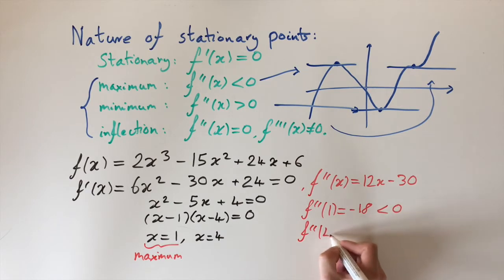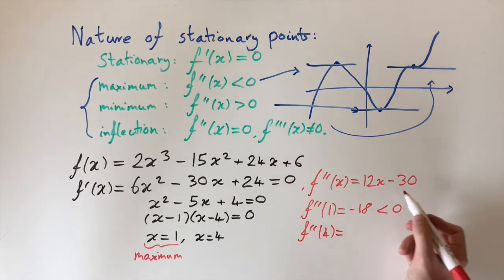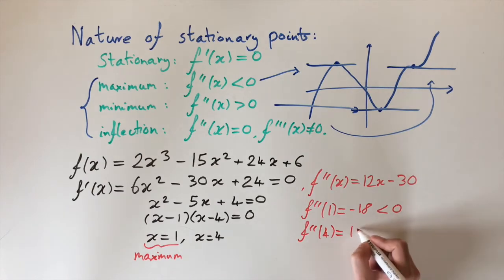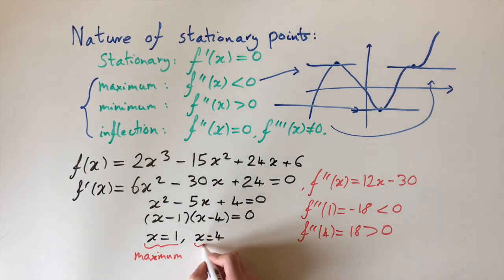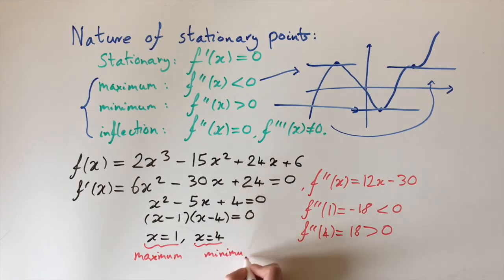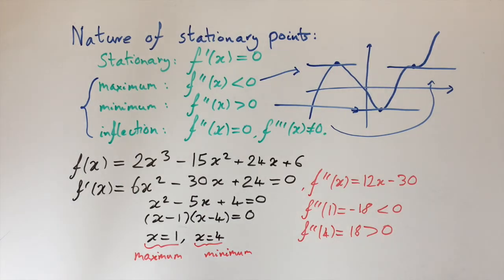We can do the same for the second point: f″(4) = 12(4) − 30 = 48 − 30 = 18. The value doesn't matter — all that matters is the sign. This is positive, so this tells us that x = 4 is a local minimum. It's a really nice method to find the nature of turning points without even having to graph the function — this already tells us a lot of information about the function.